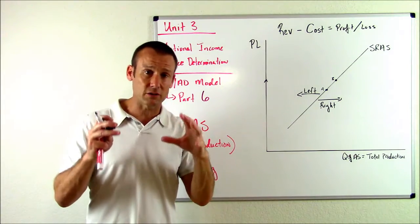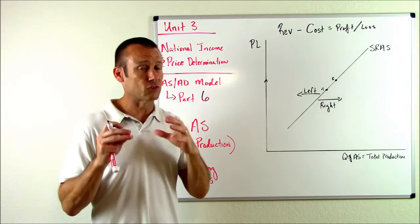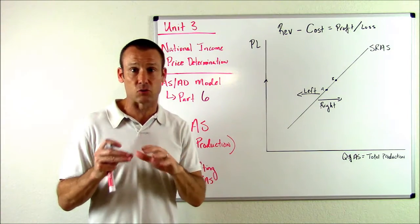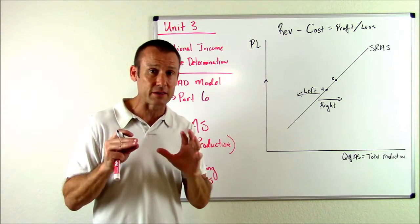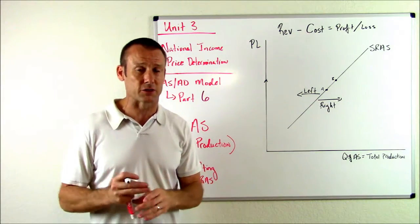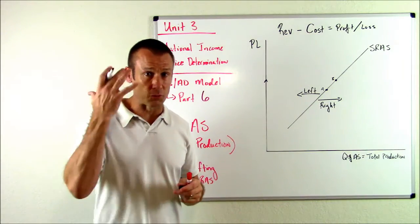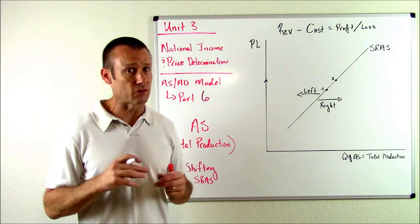If it's a change in the cost of production, then that is going to shift our SRAS. So we're looking at anything out there in the economy that changes our cost of production. So I'm going to go through a quick list. I'm going to do five big things that change the cost of production.